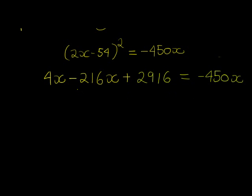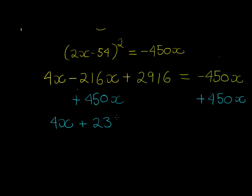Gives me 2916 is equal to -450x. So now let's add 450x on both sides just so that we can get it equal to 0 on the right hand side. That gives us 4x squared plus 234x plus 2916 equals 0.